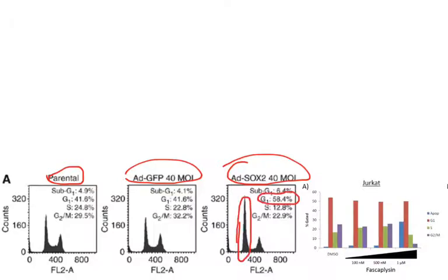For example, in these cells that have been treated, a certain percentage of those cells, 58% of them, are in G1 phase. This is compared to the control cells where only 41% of them were in G1 phase.